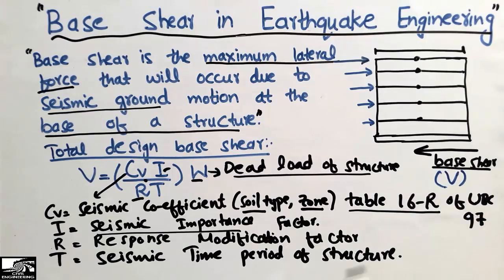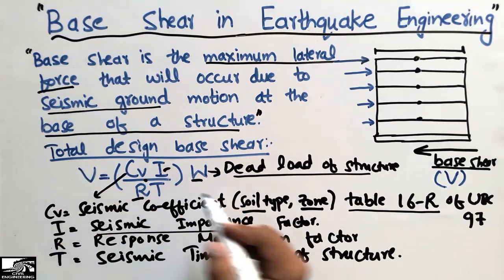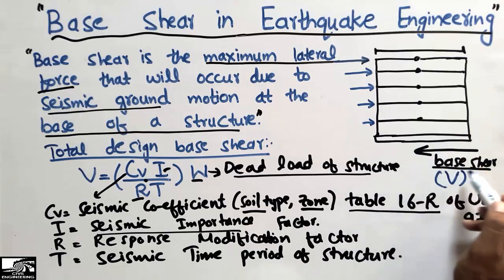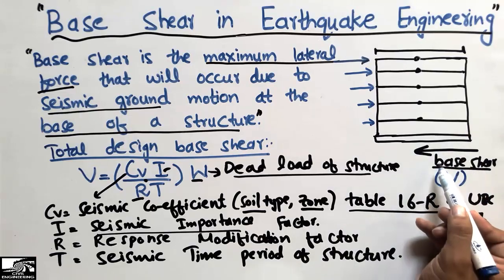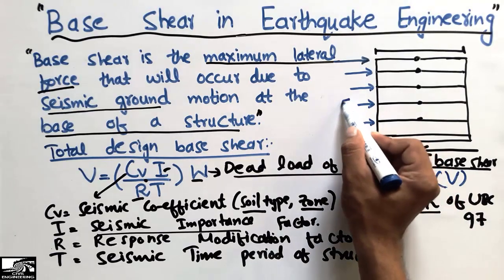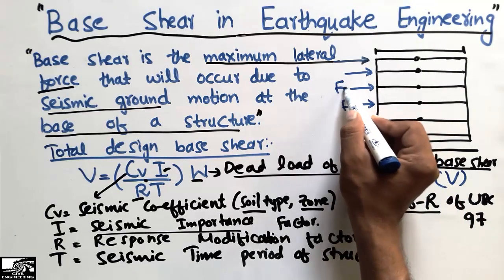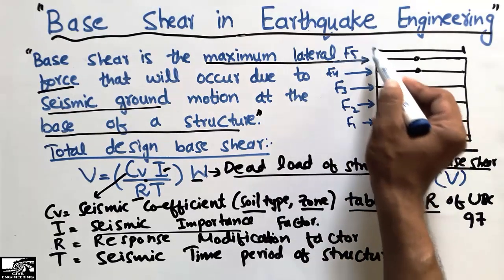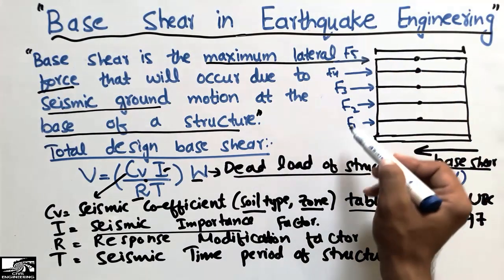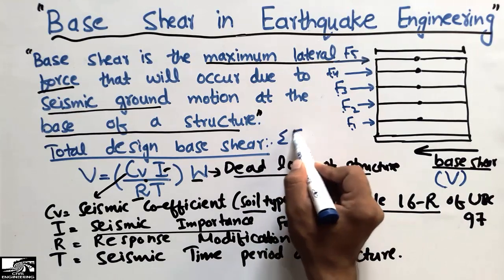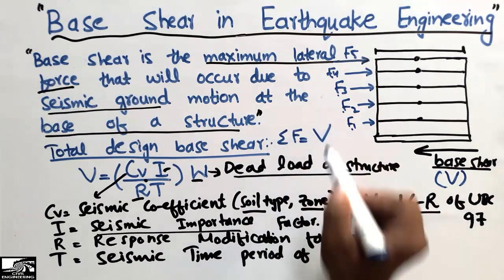This is the way to find the base shear — the total horizontal force at the base of the structure. We then split this base shear into individual floor forces: F1, F2, F3, F4, F5. The top floor (F5) experiences the maximum force, and the summation of all story forces F1 through F5 equals the base shear.